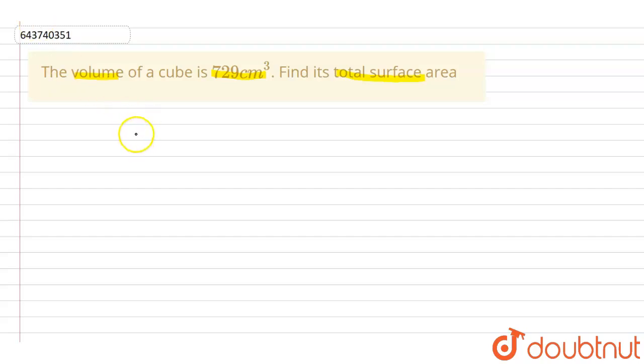According to the question, the volume of cube is 729 centimeter cube. Now we know that the formula of volume of cube is a cube where a is the side of cube. So that is equal to 729.